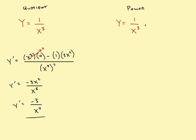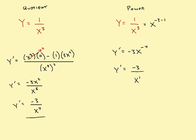Now in a case like this you can actually use the power rule. Take x cubed in the denominator, move it to the top and make it x to the negative 3. Now you can use the power rule: y prime equals negative 3x to the negative 4. Simplifying, the negative 3 stays on top and x to the negative 4 moves to the bottom as x to the positive 4 — giving you exactly the same answer as the quotient rule.